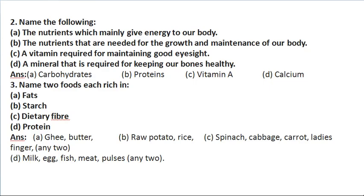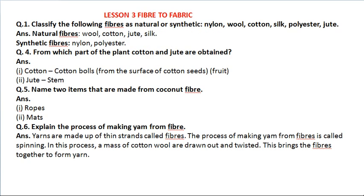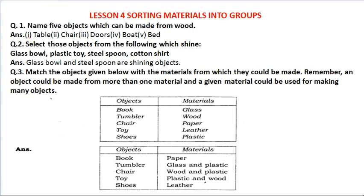Then we have Lesson 3: Fiber to Fabric — a very interesting chapter. Fiber se fabric, a very similar type of yarn that you have in cloth. These are the question answers and solutions of the questions given at the back of the chapter. Then we have Lesson 4: Sorting Materials into Groups — about how different materials look and how we classify them.